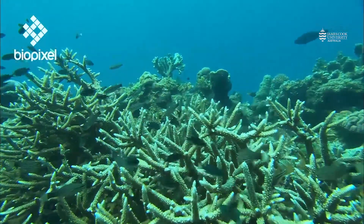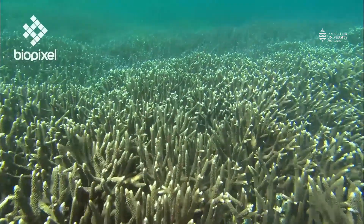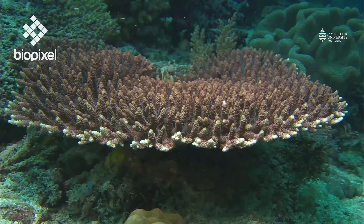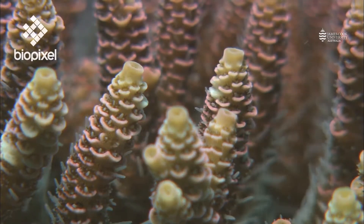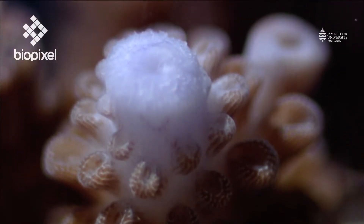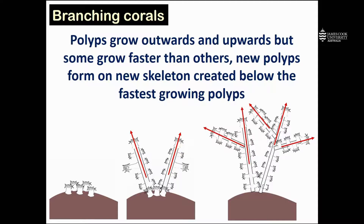We can also have branching coral morphologies. In these colonies, the polyps grow outwards and upwards, but as the colony starts to grow, some polyps grow faster than others. New polyps then form on the new skeleton created below the fastest-growing polyps. The colony always starts as a collection of a few polyps glued down onto the substratum, and over time some polyps grow faster than others, forming branch-like structures, with new polyps growing in the space that arises underneath those branches.